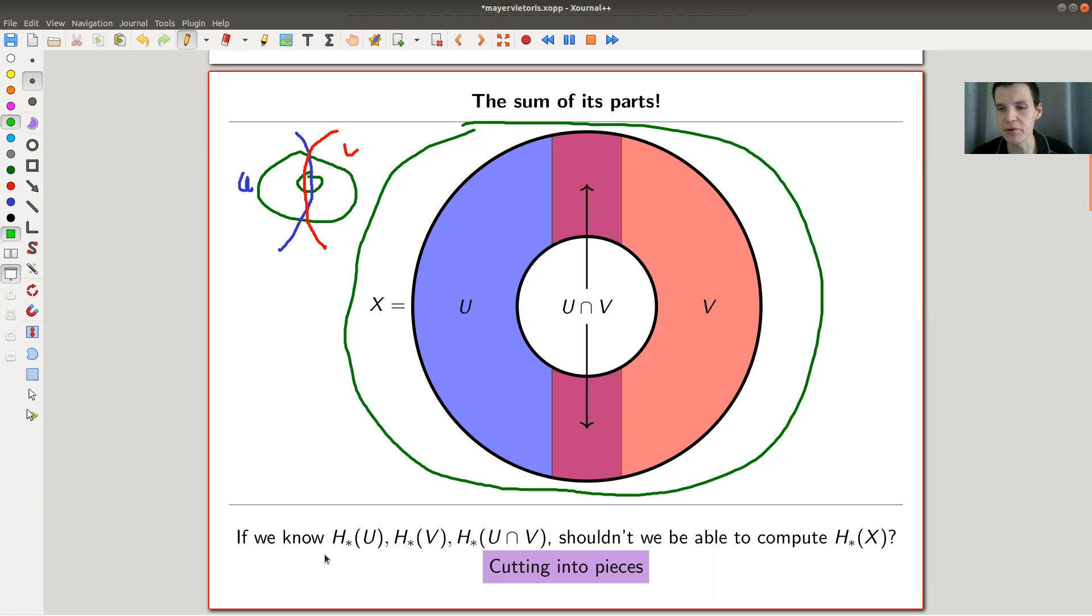If we would know all of these values, so homology for U, for V, and the intersection, shouldn't we be able to recover the homology of X? So cutting into pieces, the homology of the whole beast should be the sum of its parts in one way or the other. And the outcome is spoiler, yes it will be. But the idea is always the same, right? You cut a topological space, you make sure everything overlaps a little bit, and then you try to recover the big piece from the small pieces.